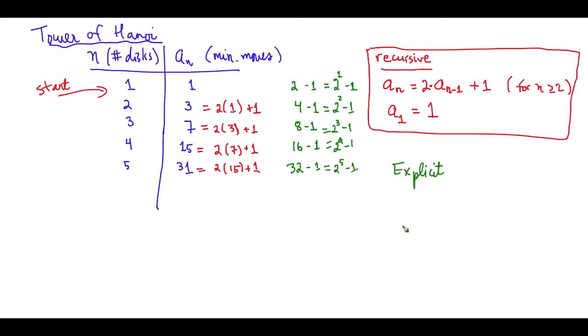So the explicit formula, and I'm going to, this looks like a sub n is equal to 2 to the n minus 1. And I'm going to put a question mark here because we haven't quite proven this yet.